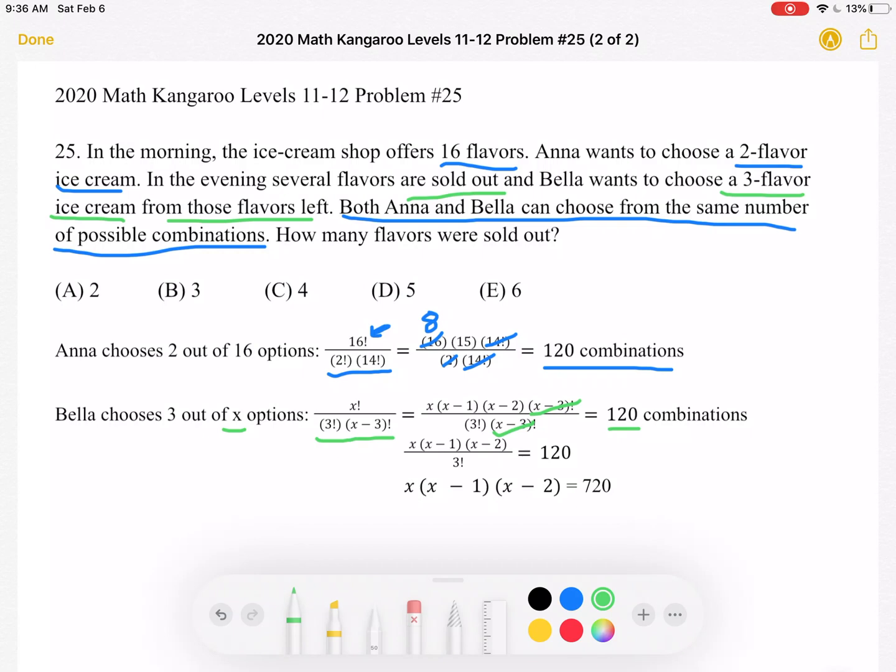After we've canceled out the X minus 3 factorials in top and bottom, we'll get this expression. 3 factorial is equal to 3 times 2 times 1, which is 6. So if we multiply by 6 on both sides of this expression, we will get X times X minus 1 times X minus 2 is equal to 6 times 120, which is 720.